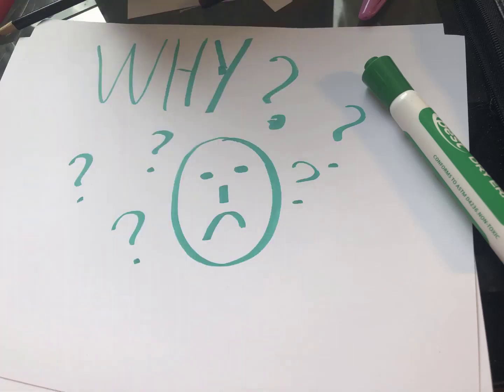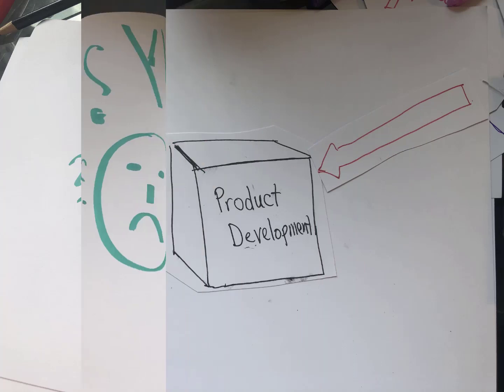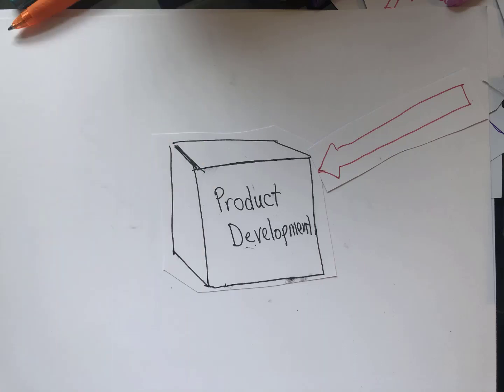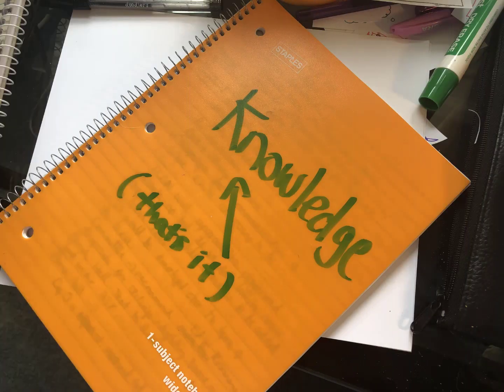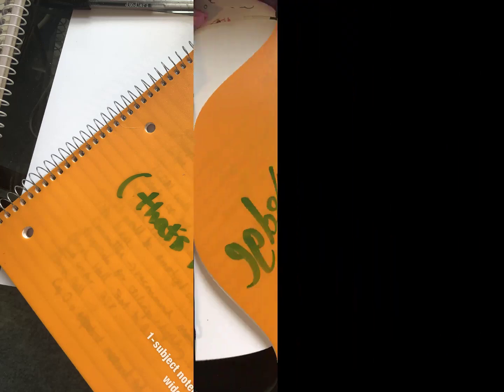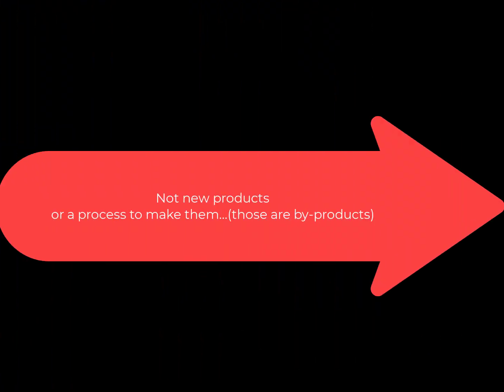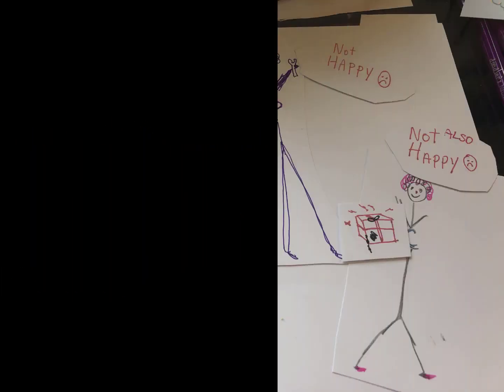That means we need to ask why. So let's take a look inside product development and ask: what is product development really making? It turns out what product development is making is knowledge — just knowledge. It's not making new products or a process to make them. Those are byproducts of making knowledge.